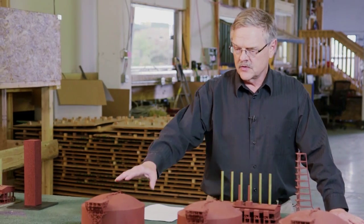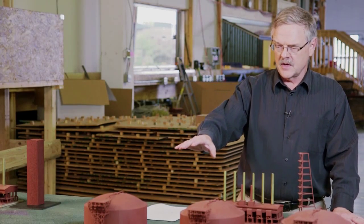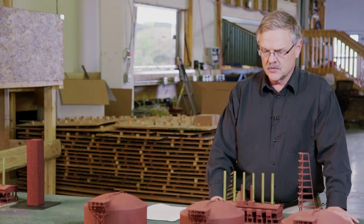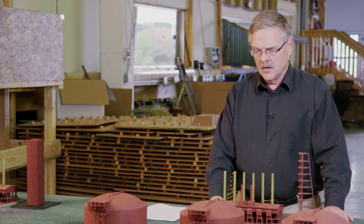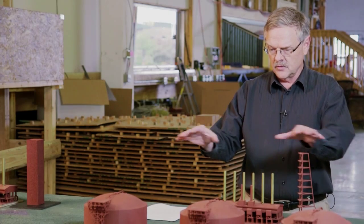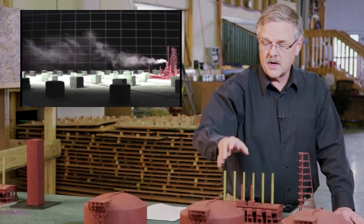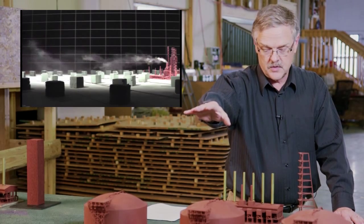If you want more accurate dispersion predictions for sites like this where AirMod's not designed, what you need to do is an equivalent building dimension study. What you do is build a scale model of the actual site like this we're looking at right here. You release a tracer gas from the stacks in the wind tunnel, measure the concentrations downwind and get the maximum concentrations versus downwind distance.